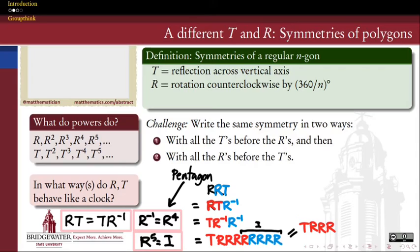Yeah, it's a transparent operation. So TRR I, since I is the identity, that just becomes TRR.